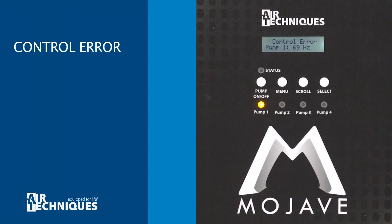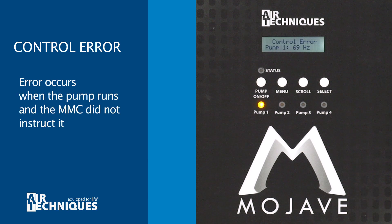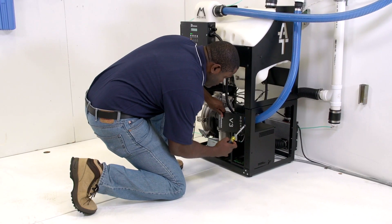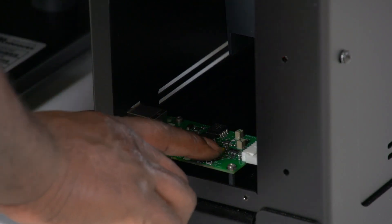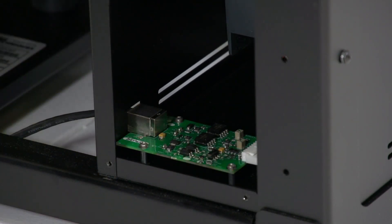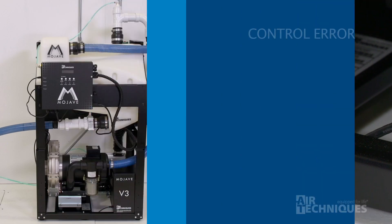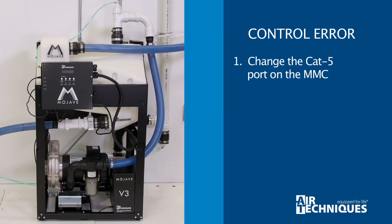The control error occurs when the pump is running and the MMC did not instruct it to run. Check the bypass switch and ensure that it is in the off position. If the problem continues with the bypass switch in the correct position, change the port on the MMC that the CAT5 cable is connected to. If this doesn't stop the error, change the CAT5 cable.